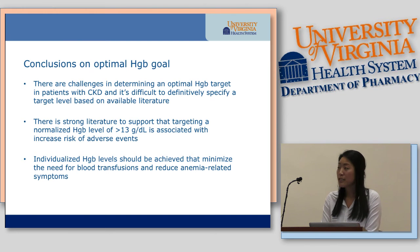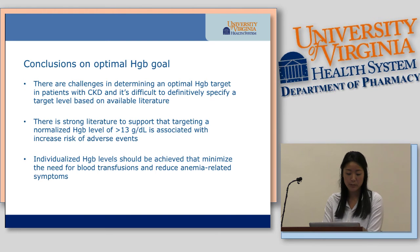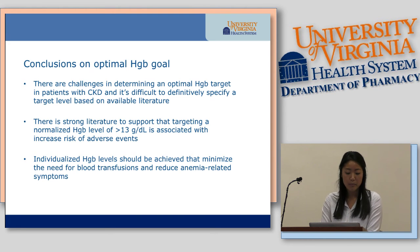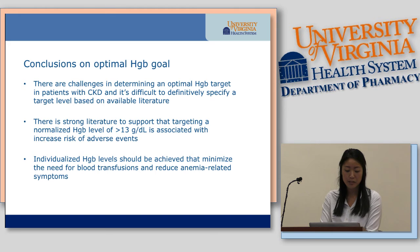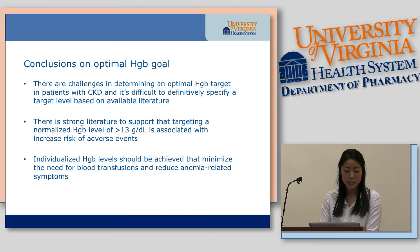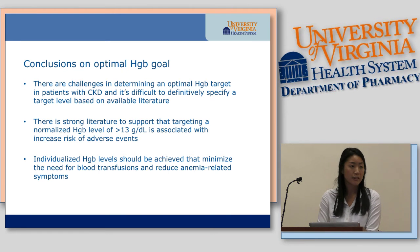From these trials we can conclude that there are challenges in determining an optimal hemoglobin target in patients with chronic kidney disease, and it's difficult to definitively specify a target level based on the available literature. However, there is strong evidence that targeting a normalized hemoglobin greater than 13 is associated with increased risk of adverse events, and that an individualized hemoglobin level should be achieved that minimizes the need for blood transfusions and reduces anemia-related symptoms.